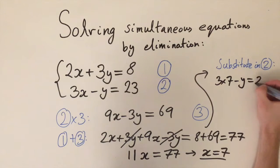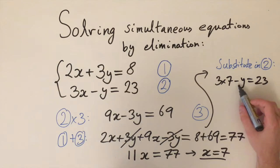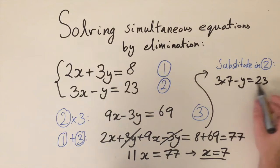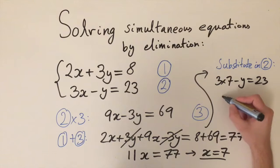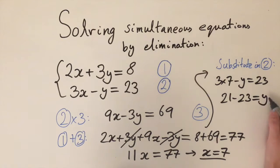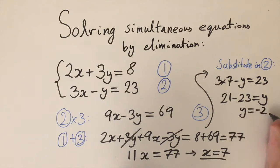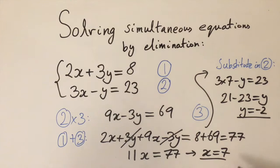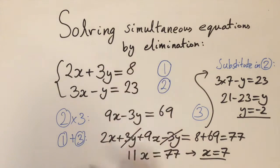Rearranging for y: 3 times 7 is 21, and subtracting 23 from both sides gives 21 minus 23 equals negative 2, so y equals negative 2. Together, x equals 7 and y equals negative 2 is the solution of this pair of simultaneous equations.